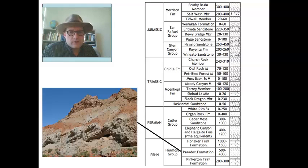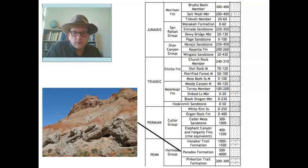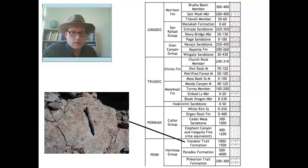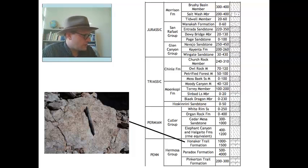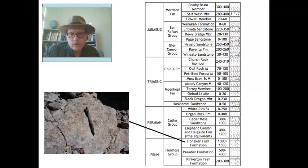The Paradox Formation is one of the thickest units in the stratigraphic section, going up to 4,000 feet in thickness, though it varies quite dramatically across the basin. This salt layer sits at the very bottom of the stratigraphic sequence. On top of the Paradox Formation we have the Honaker Trail Formation, which is a limestone — a carbonate rock — just full of marine fossils including crinoids, brachiopods, and bryozoans, representing reef deposits.